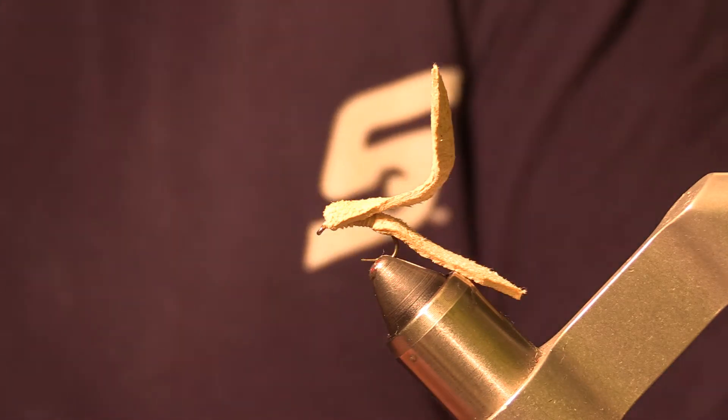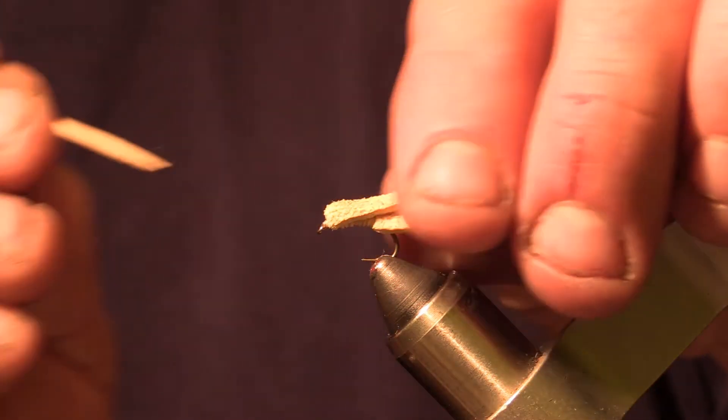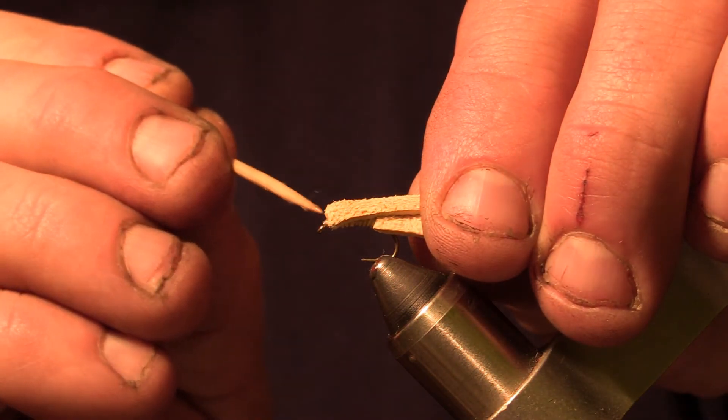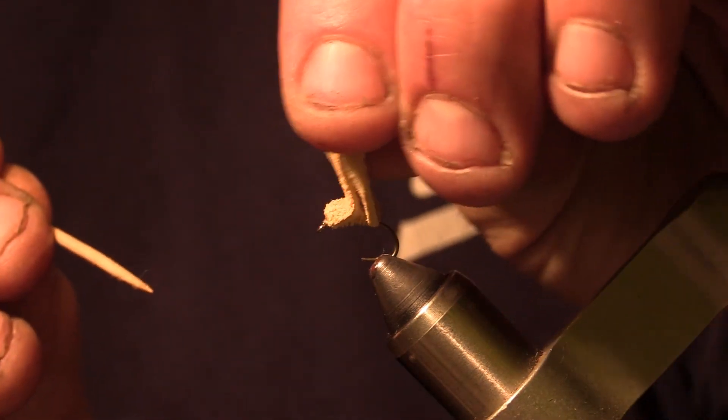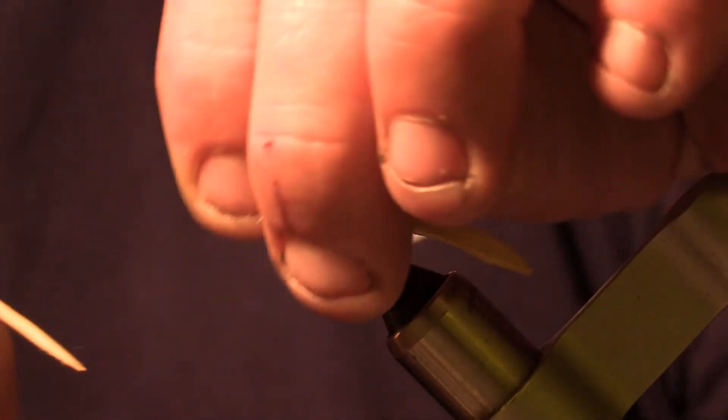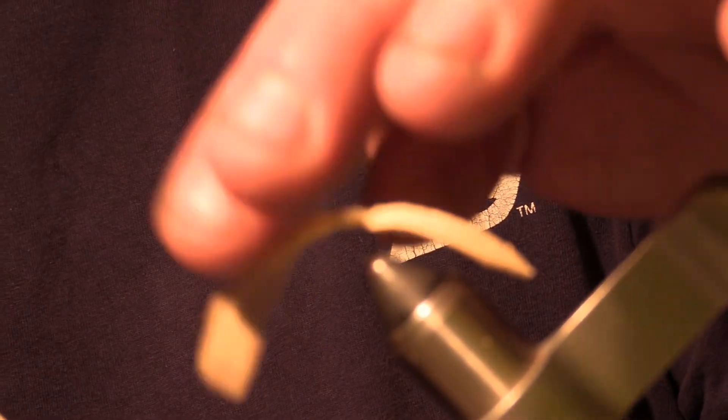And then you can take a dab of super glue or head cement and put it over the thread wraps in the front. And there you have it, that's your chamois worm.